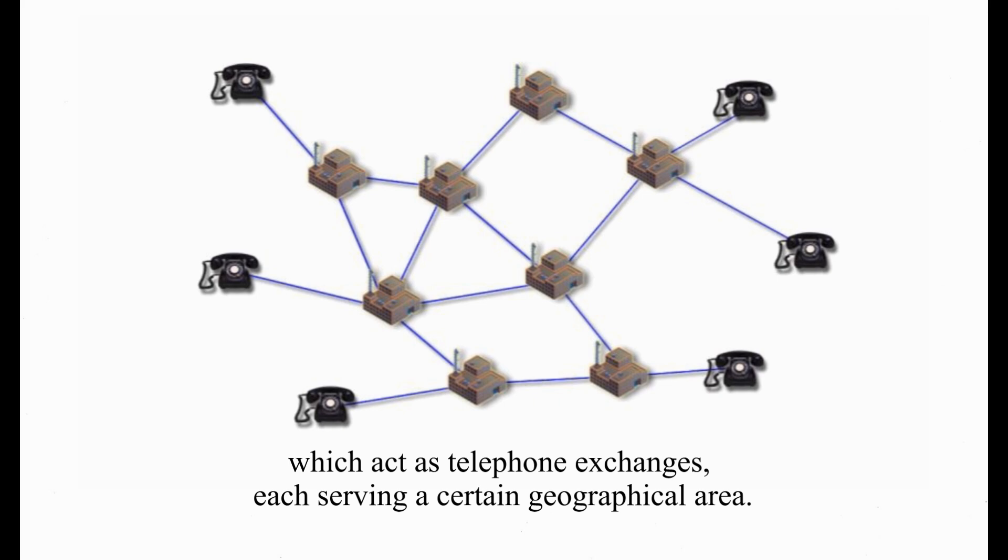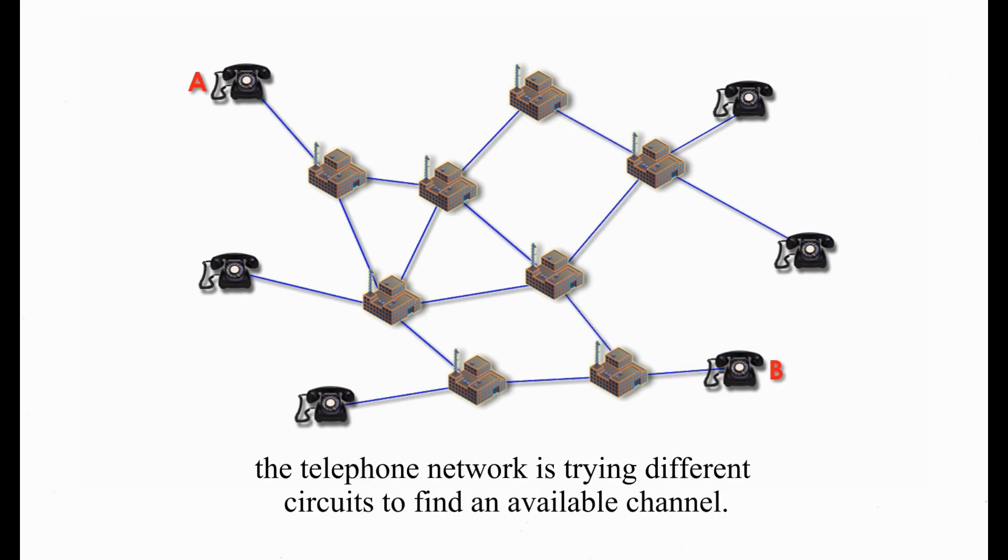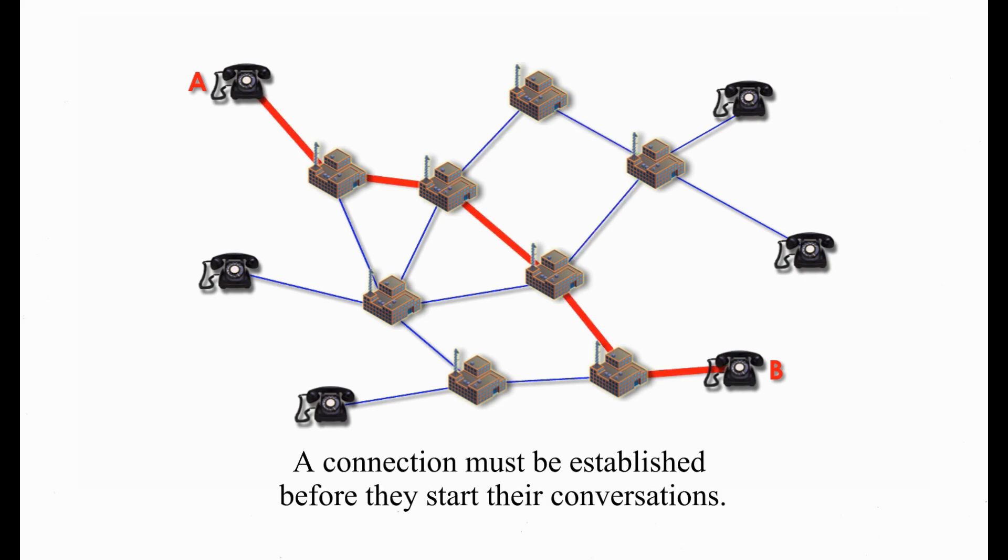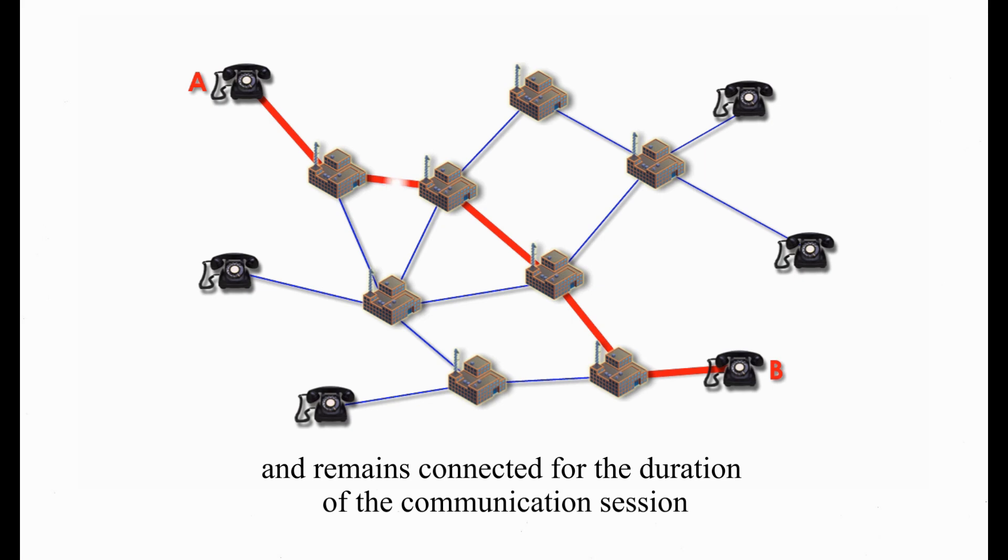When a person A calls a person B, for example, the telephone network tries different circuits to find an available channel. A connection must be established before they start their conversations. Once the channel is decided, it guarantees the full bandwidth and remains connected for the duration of the communication session until users terminate their connection.